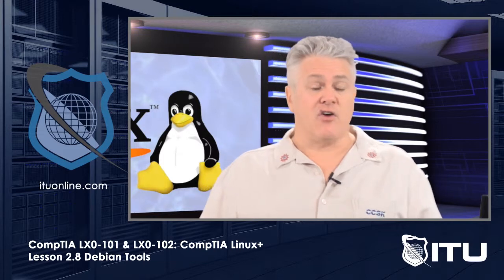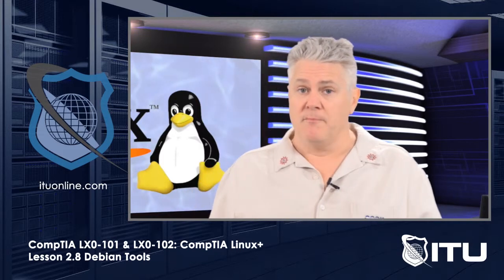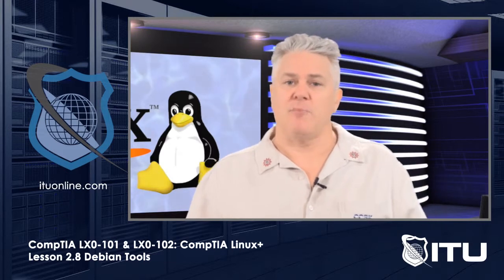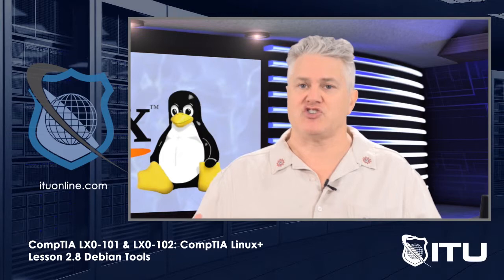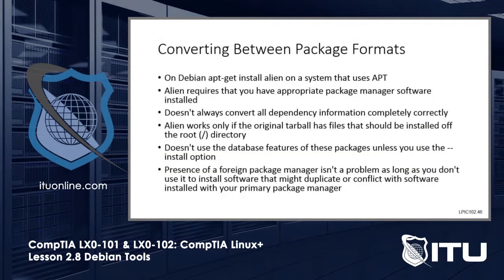The other key condition involves the tarball, which stands for tape archive — basically the file directory structure of the original programming. Alien works if the original tarball is installed off the root directory. Some tools don't do that, so you have to be ready for that. Also, this tool doesn't use any database features or look at package information — it just extracts the files. You're going to have to export, get the package, and then rebuild it for your other package manager.